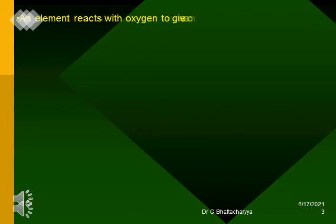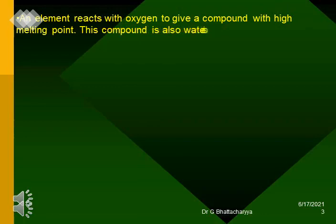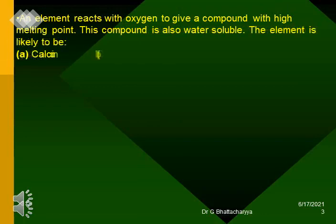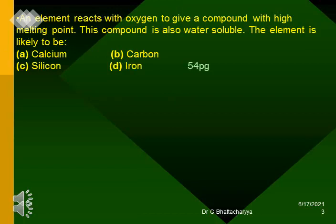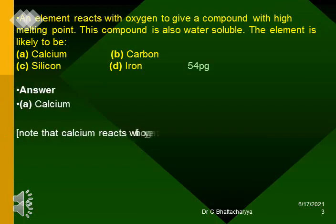An element reacts with oxygen to give a compound with a high melting point. This compound is also water-soluble. The element is likely to be: A. Calcium. B. Carbon. C. Silicon. D. Iron. Answer: A. Calcium. Note that calcium reacts with oxygen to form calcium oxide.